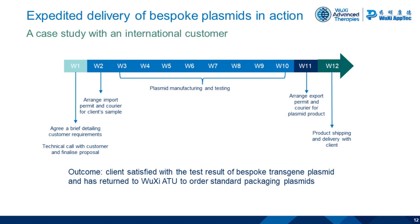As one example client case study, a client ordered a bespoke research grade plasmid, which was delivered with a turnaround time of 12 weeks. The customer was very happy and came back to us for an order of the standard packaging plasmids. Those standard packaging plasmids are now in stock and could be made available within just two to three weeks.